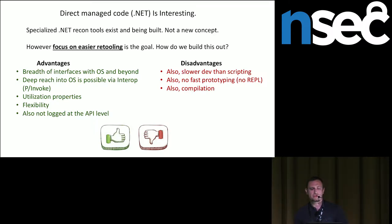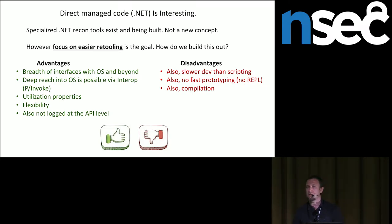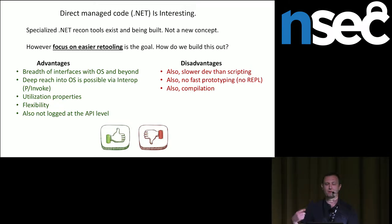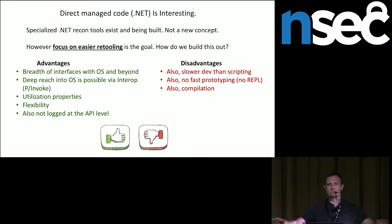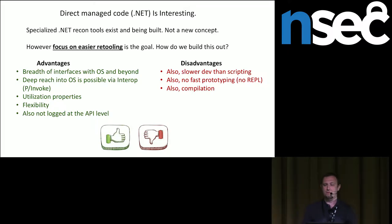But .NET does have disadvantages we have to deal with. First, it's slower dev time — you have to go through the cycle of writing, compiling, writing, compiling. There's very little prototyping inherent to the box; we're taking it as carte blanche with nothing installed on the Windows machine except .NET and maybe a compiler. And compilation is identifiable by digital forensics as well.